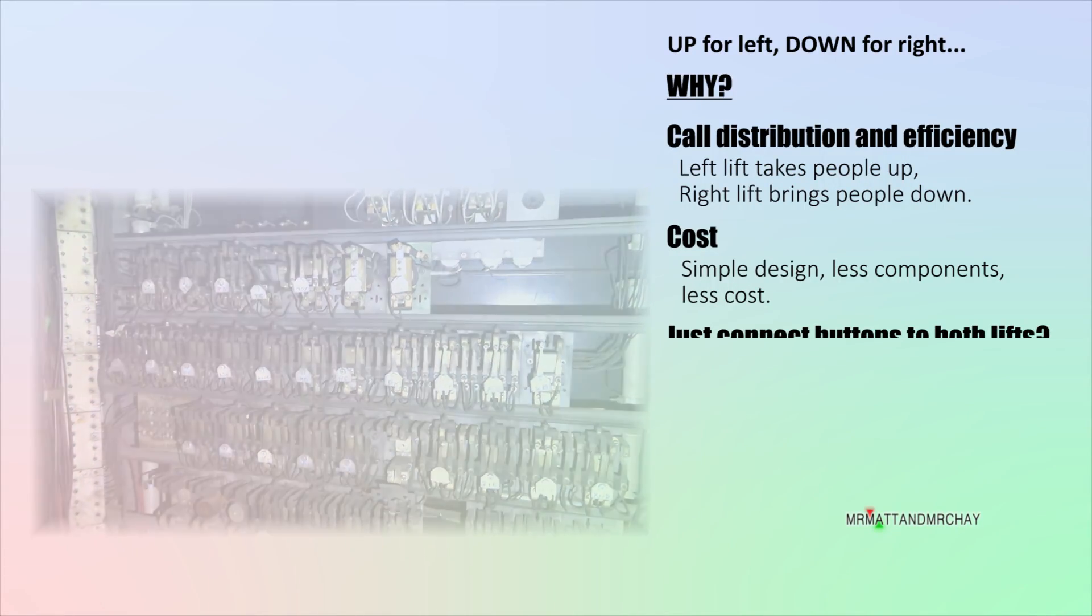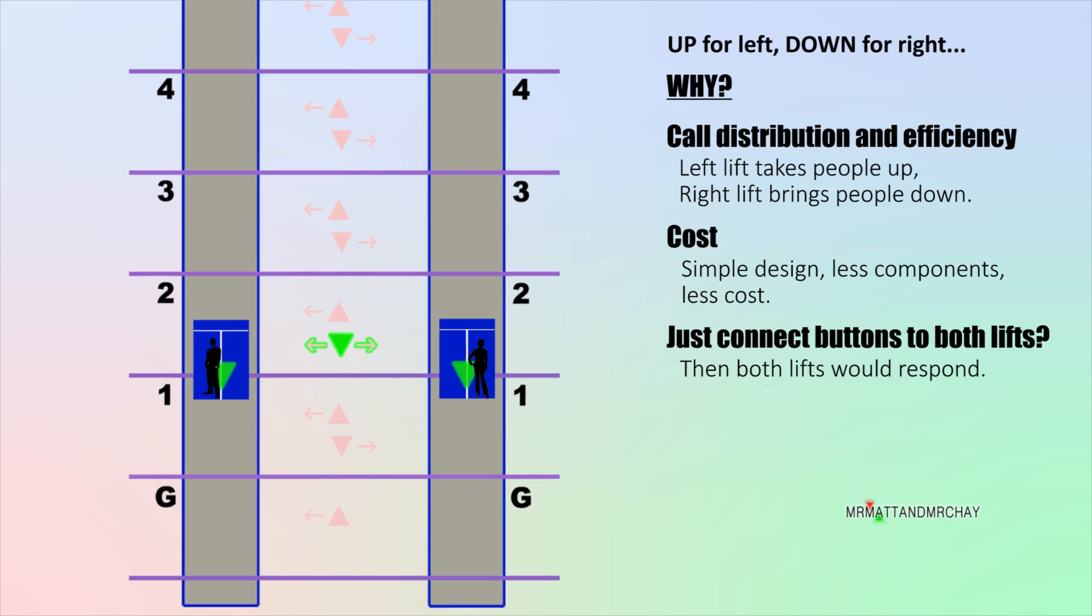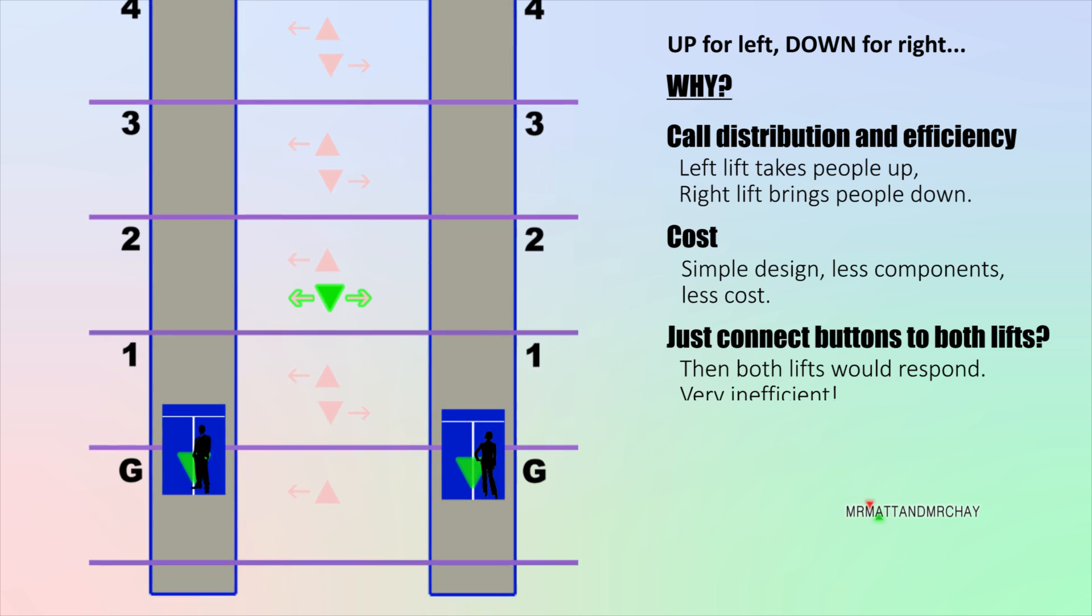So why can't the buttons be connected to both lifts? Simple answer. If we did, then both lifts will be dispatched to the same floor. Sometimes this does happen as you'll see in my how it works animation in a moment. But to design a lift that dispatches two lifts to the same call is very inefficient.